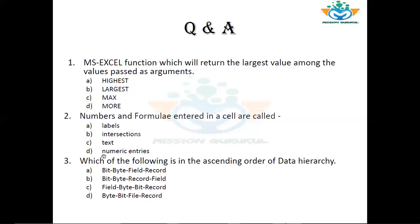Question number 3: Which of the following is in the ascending order of data hierarchy? Options: A) Bit, Byte, Field, Record; B) Bit, Byte, Record, Field; C) Field, Byte, Bit, Record; D) Byte, White. Bit comes first, then Byte. We have seen that Record is a row and Field is a column — the row is made of multiple columns. So the order from smallest to largest is Bit, Byte, Field, Record. The correct answer is A.